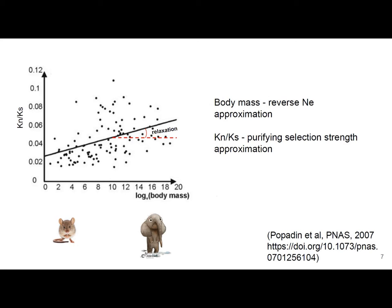It is known that species with low effective population size accumulate more non-synonymous substitutions compared to species with high effective population size. In this figure, you can see that if we regress the KN/KS ratio — a metric of strength of purifying selection — versus body mass, which approximates effective population size, the slope of this regression will be positive. We call this slope relaxation. We expect that Hsp90 should not relax as much, because it has a very important function, especially in species with low NE. If we define relaxation of Hsp90 as alpha and relaxation of other genes as beta, then alpha should be less than beta.